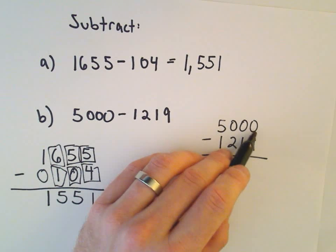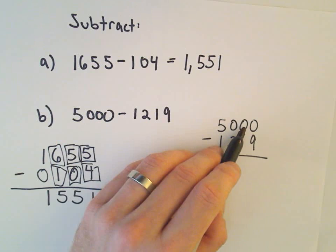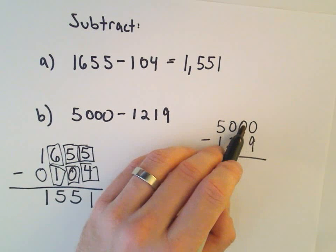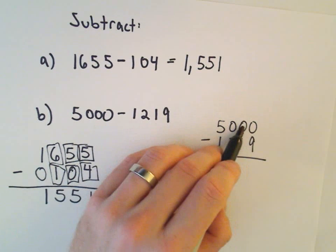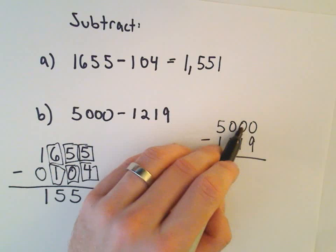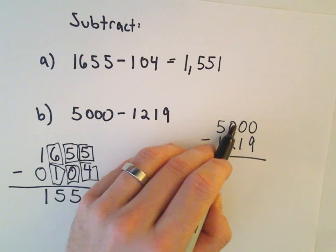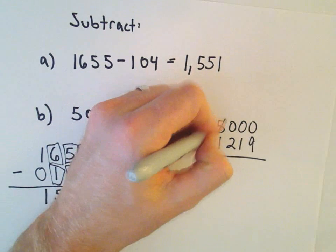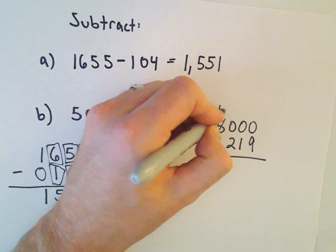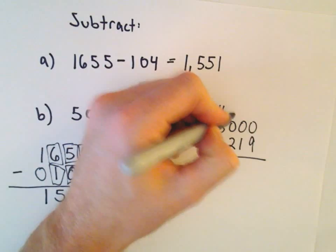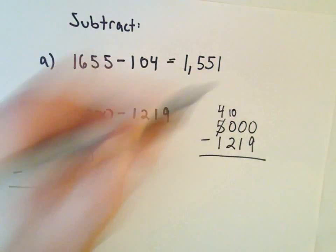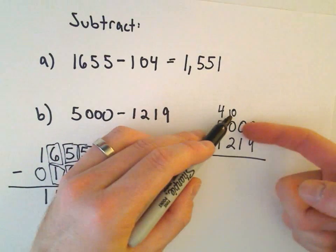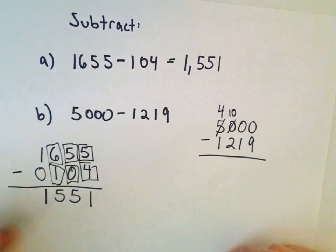So what we want to do is borrow a digit from the next place. Well, notice there's all 0s here. We can't really take anything from the next one. So the first place we can take a digit from is the 5. So we're going to drop that down to a 4. And then we're going to pretend that instead of a 0, we've now got a 10. So I'm going to get rid of this digit as well.